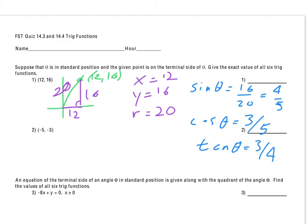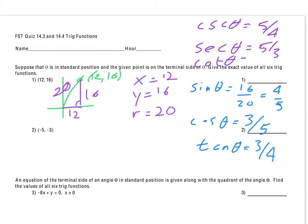The reciprocal of sine is cosecant, so that would be 5 over 4 — we just flip it over. The reciprocal of cosine is secant, so that would be 5 thirds. And the reciprocal of tangent is cotangent, so that would be 4 thirds. You can figure each of those using their own ratios, but it works quickly once you have sine, cosine, and tangent to just take reciprocals.